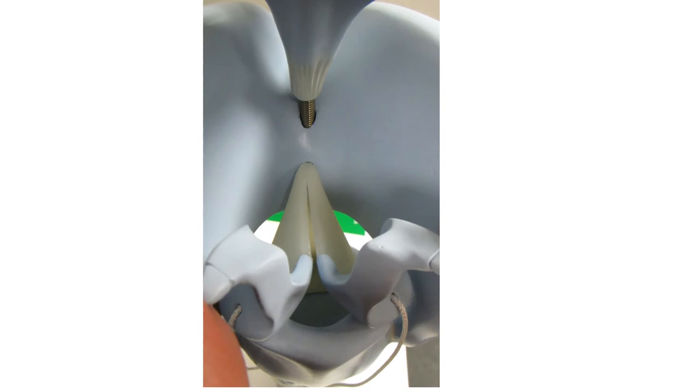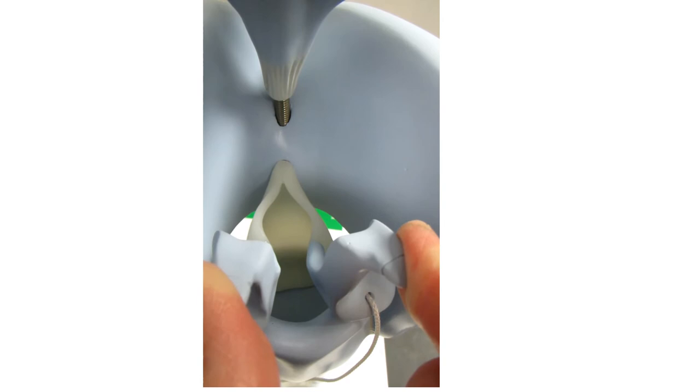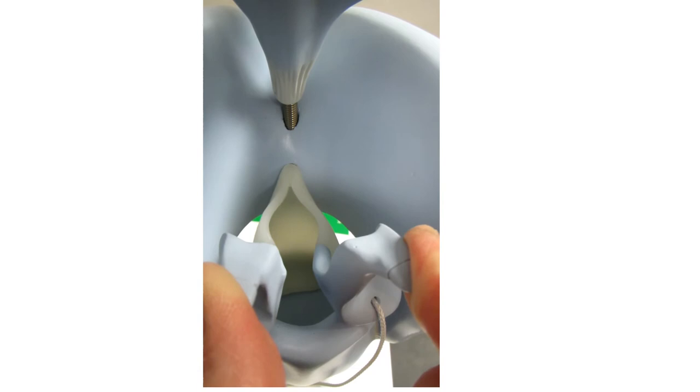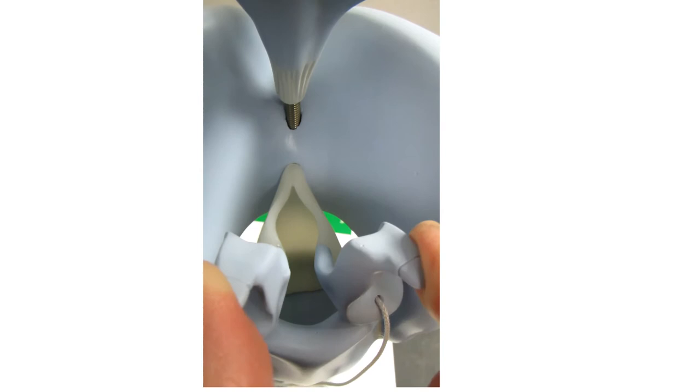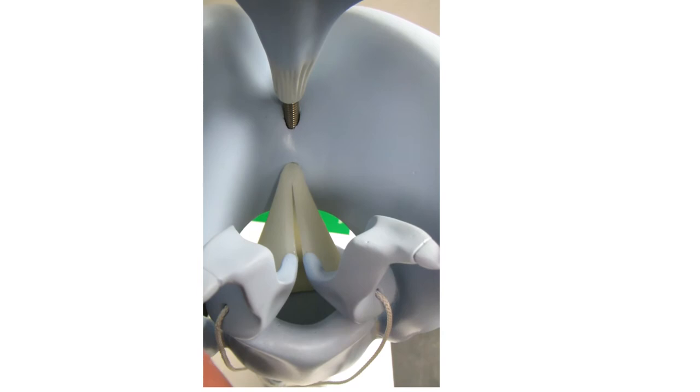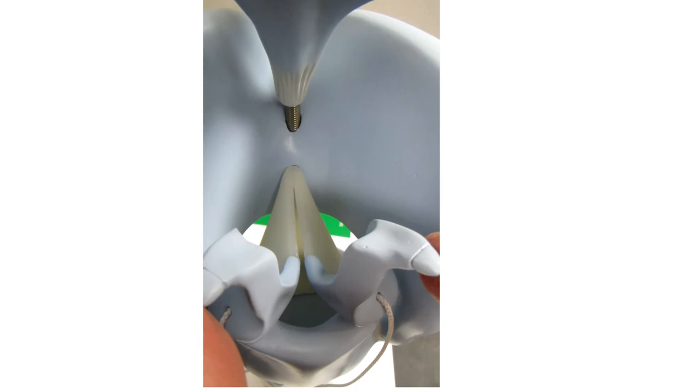This is the glottis, the opening into the windpipe, into the trachea, and then down into the lungs. This is the way that air is conducted down into the lungs. When that glottis is open, we're breathing or talking. When it's closed, it's because we're swallowing food, liquid, saliva, or otherwise trying to keep foreign material out of there.